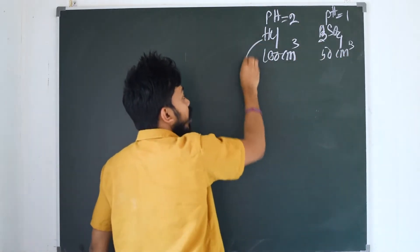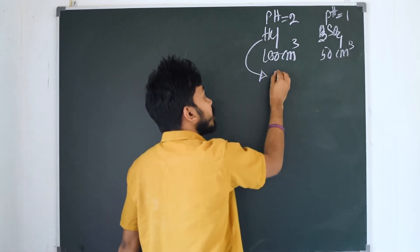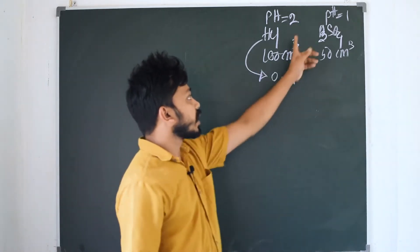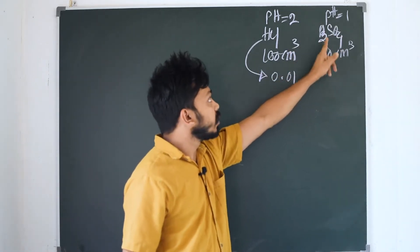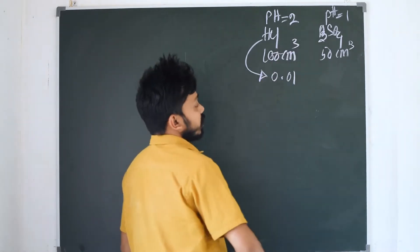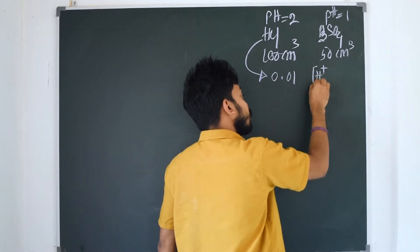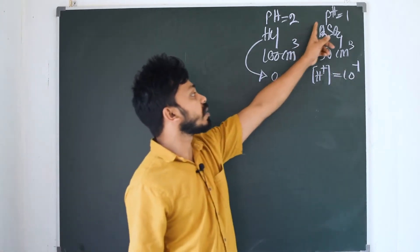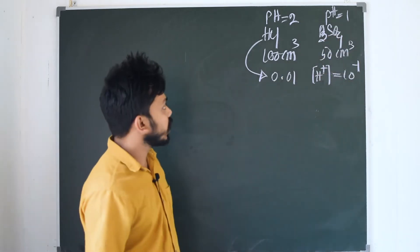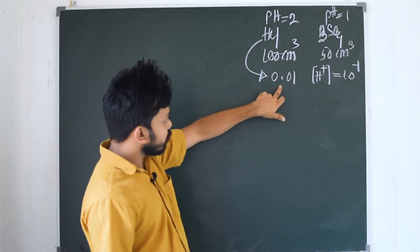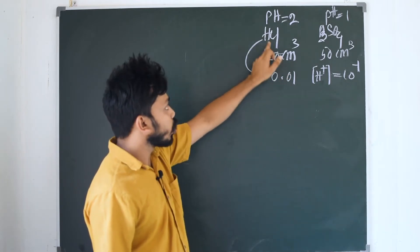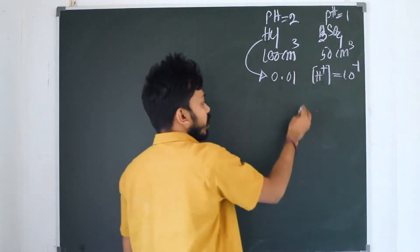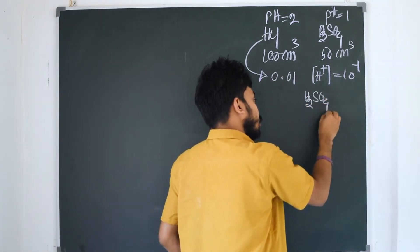I'm going to show you the pH. How does the pH mean? In HCl and H⁺, we can make H⁺ plus 1, 2. We're going to make H⁺ total. H₂SO₄ is H₂SO₄.